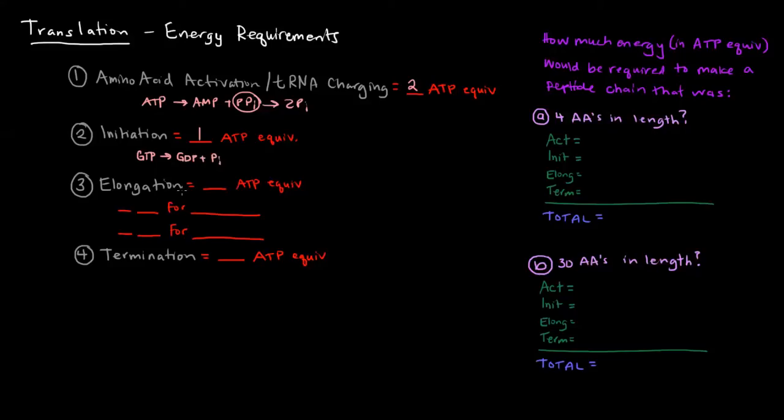The elongation required two ATP equivalents. There was one GTP for the actual elongation step in which we formed the covalent bond between the two amino acids, and one GTP required for translocation. So now, each elongation step required two ATP equivalents.